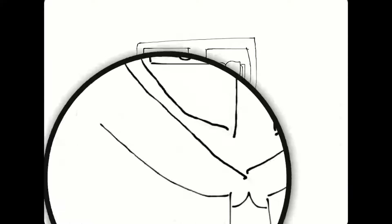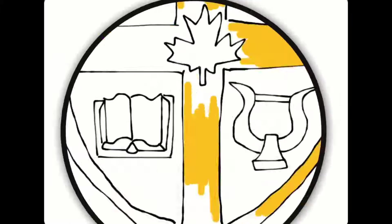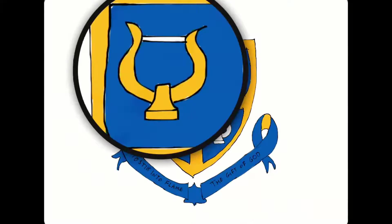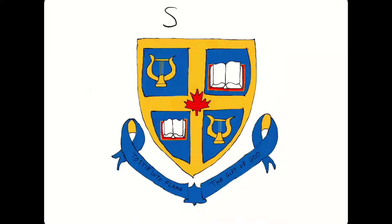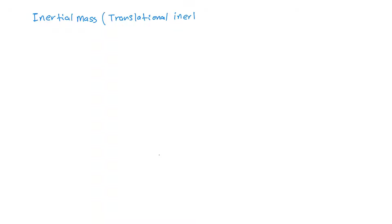Hello and welcome to this video lesson. This video lesson will be covering concepts of moments of inertia. We're going to start off with some definitions, and the first definition we'll cover is inertial mass or translational inertia. The definition of this is the ability of an object to resist linear acceleration.